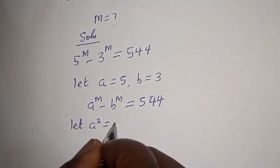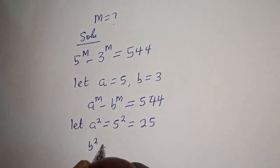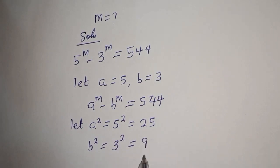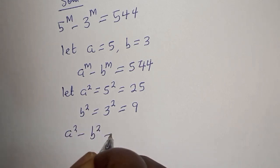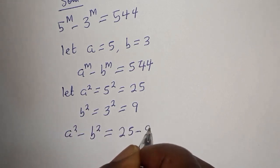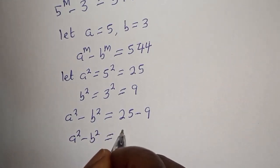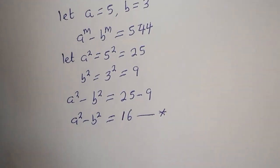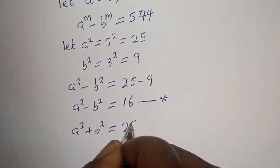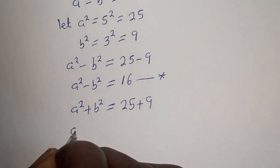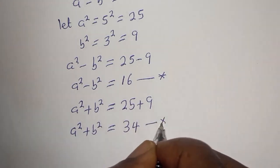Let a squared equal 5 squared, which is 25. And b squared equal 3 squared, which is 9. Therefore, a squared minus b squared equals 25 minus 9, which is 16 — call this equation star. Also, a squared plus b squared equals 25 plus 9, which is 34 — call this equation double star.